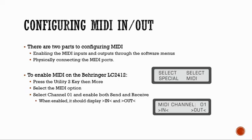To enable MIDI on the Behringer LC2412, you press the Utility 2 key then More. You select the MIDI option, then select channel 01 and enable both send and receive. When enabled, it should display 'in' with a greater-than and less-than sign, and 'out' with a greater-than and less-than sign.